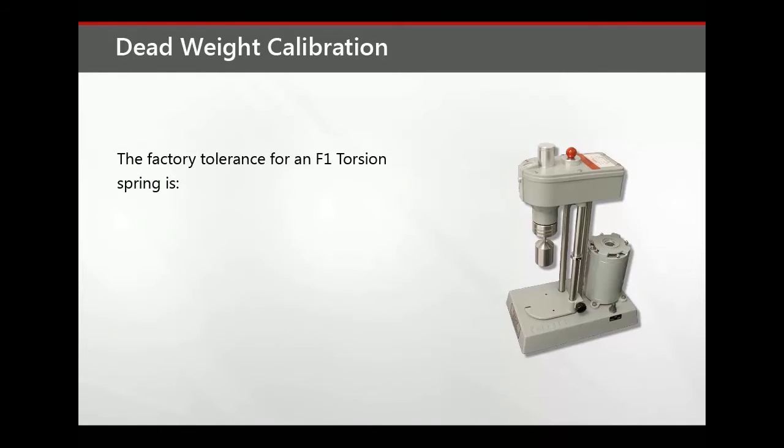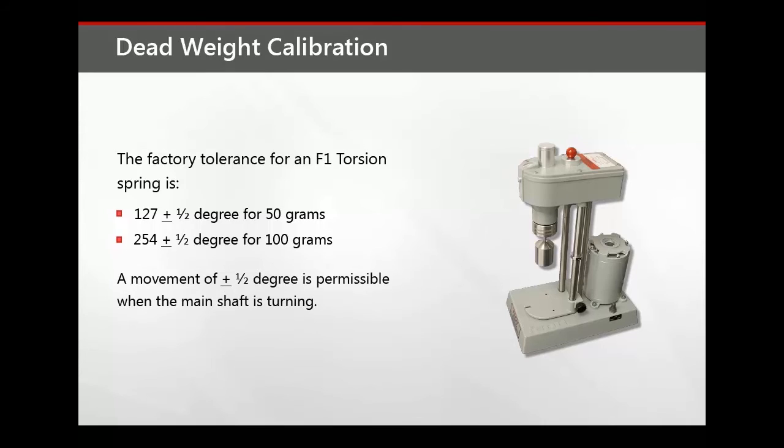When determining the results of the calibration, the factory tolerance for an F1 torsion spring is 127 plus or minus a half degree for 50 grams and 254 plus or minus a half degree for 100 grams. A movement of plus or minus one half degree is permissible when the main shaft is turning.